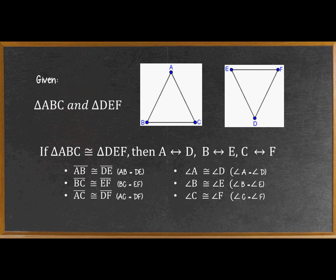Also, angles A, B, and C are congruent to the other triangle's angles, which are angle D, angle E, and angle F, which means that angle A is equal to angle D, angle B is equal to angle E, and angle C is equal to angle F.